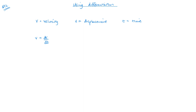Acceleration can also be expressed as a rate of change of velocity, so that's dV/dt. And that could also be written as the second derivative of displacement: d²S/dt². Since V is dS/dt, differentiating dV/dt gives us d²S/dt².